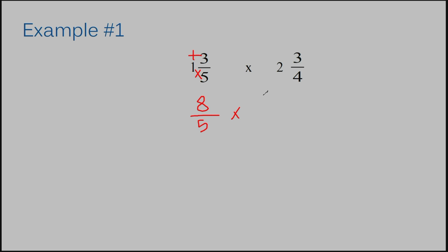Now I'm going to multiply that by whatever this improper fraction will be. Four times two is eight, eight plus three is eleven. My denominator remains four. Now the really good thing about multiplying fractions is you do not need to get a common denominator — you multiply straight across. You multiply your numerators together and then your denominators together. So eight times eleven is eighty-eight, then five times four is twenty.